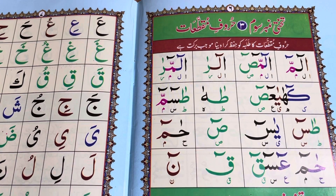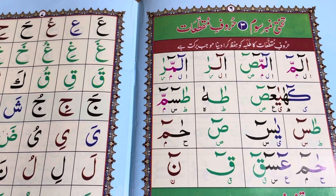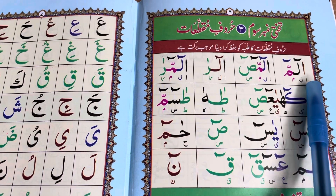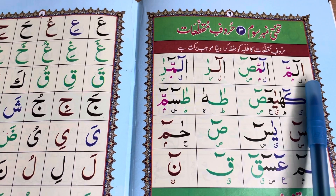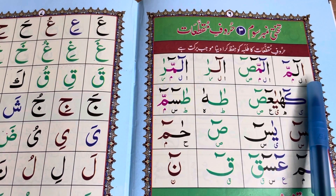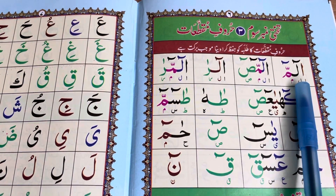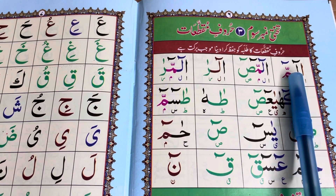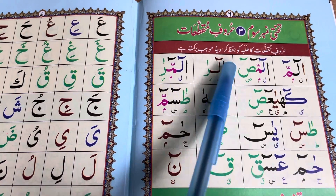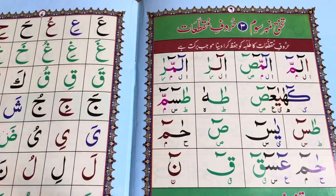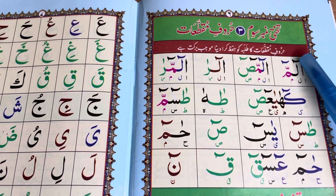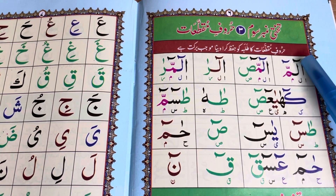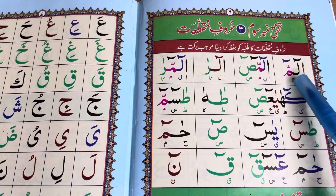It's not compulsory that you memorize them, but it's good if you do. In the first one, it is Alif — as you all know, the brown one — and the next one, the black one, is Lam. It has one symbol on the top called Mud, spelled M-A-D.